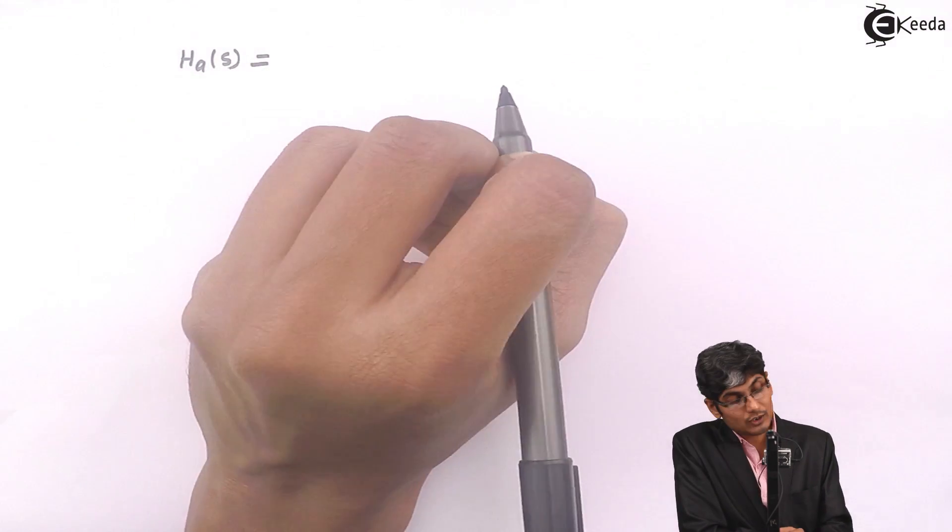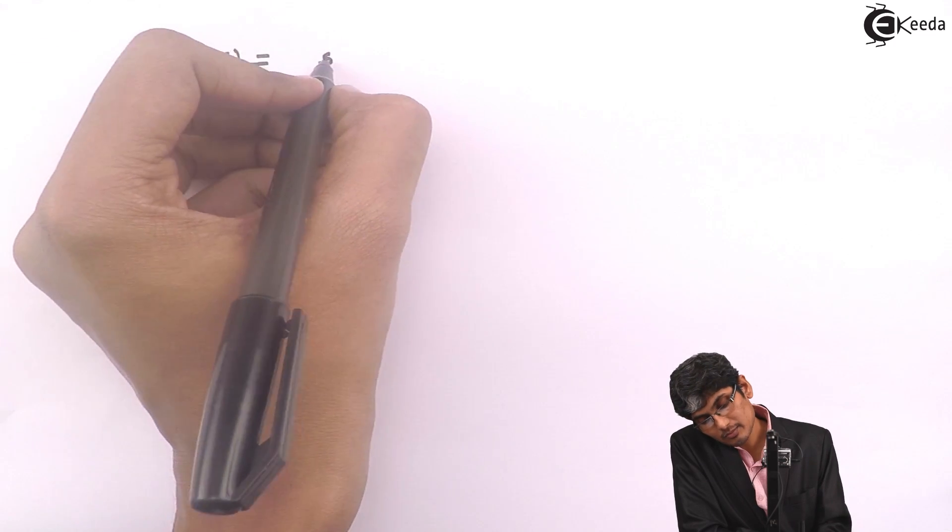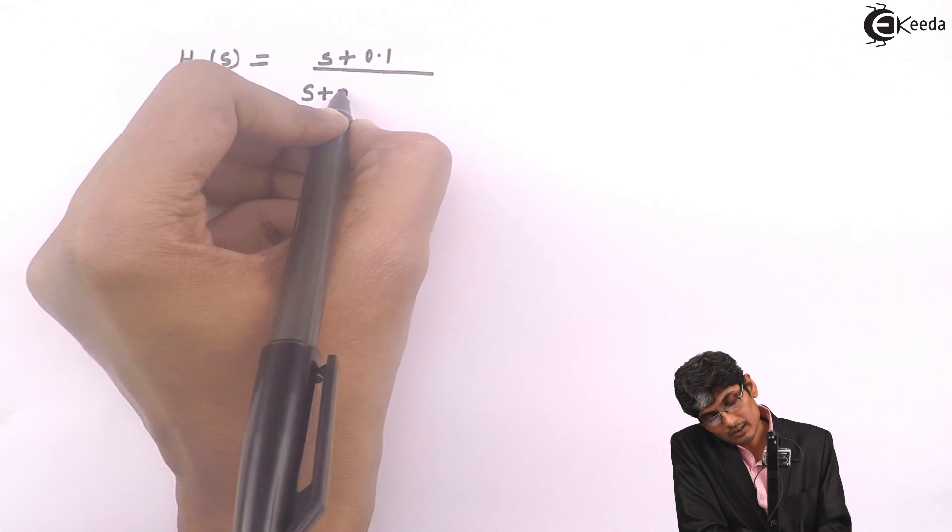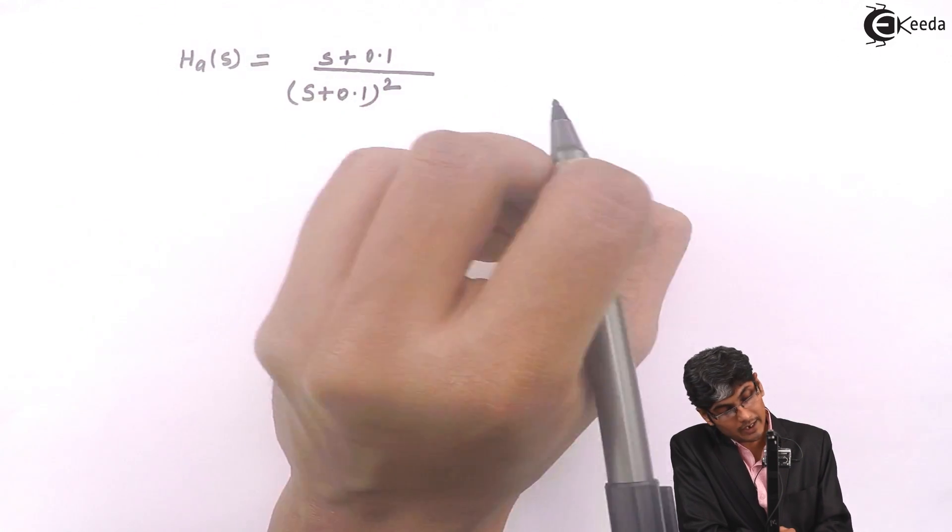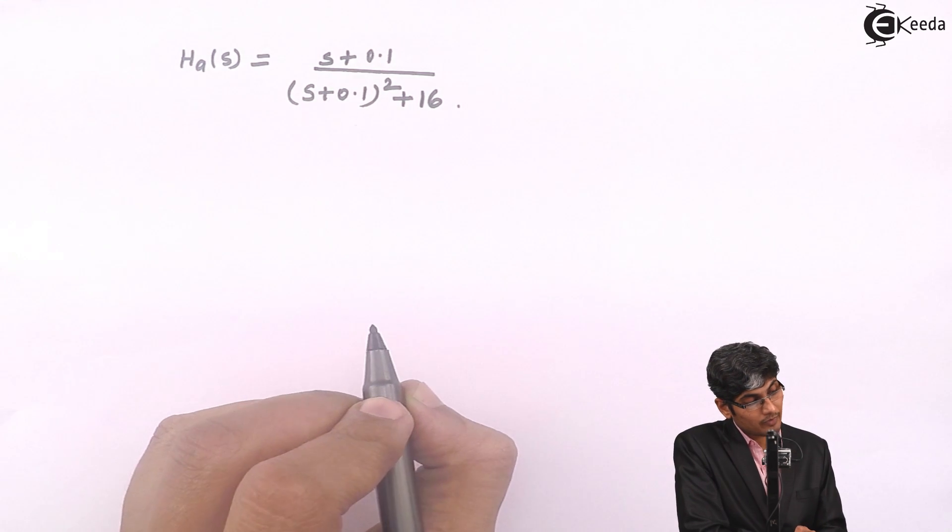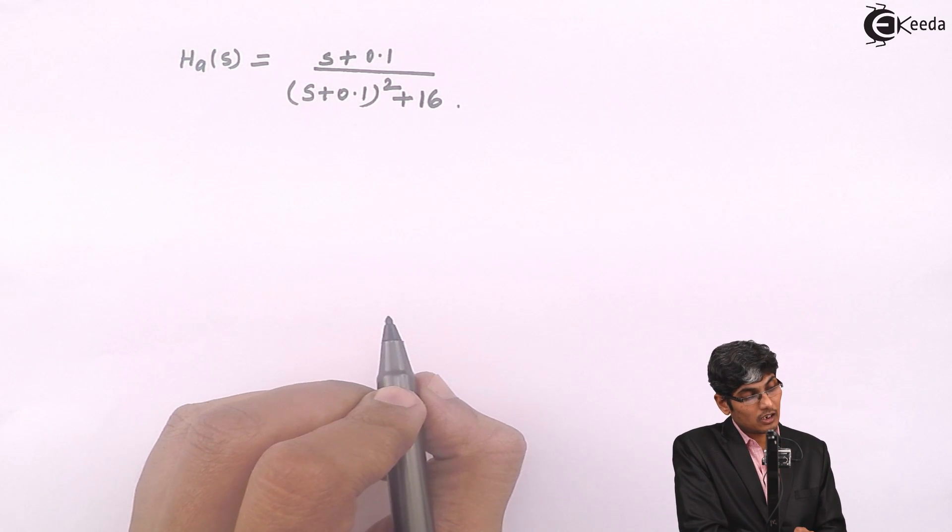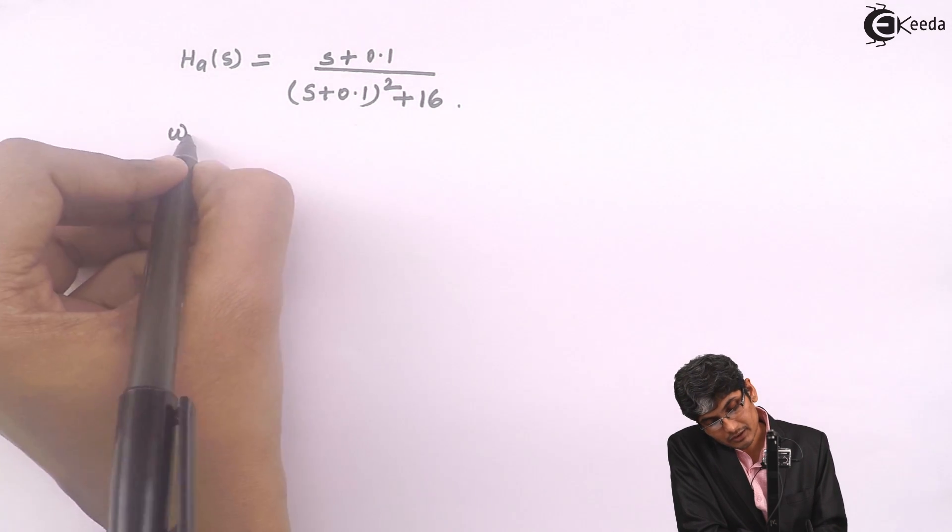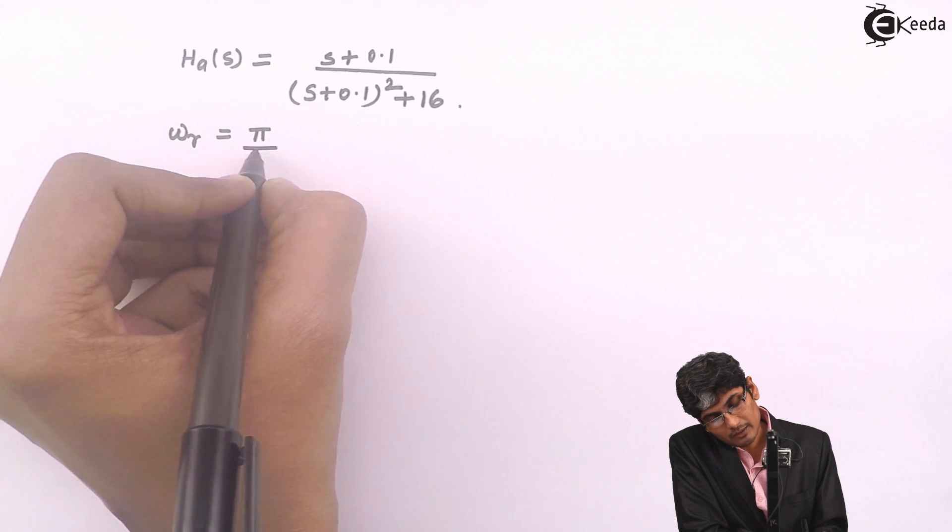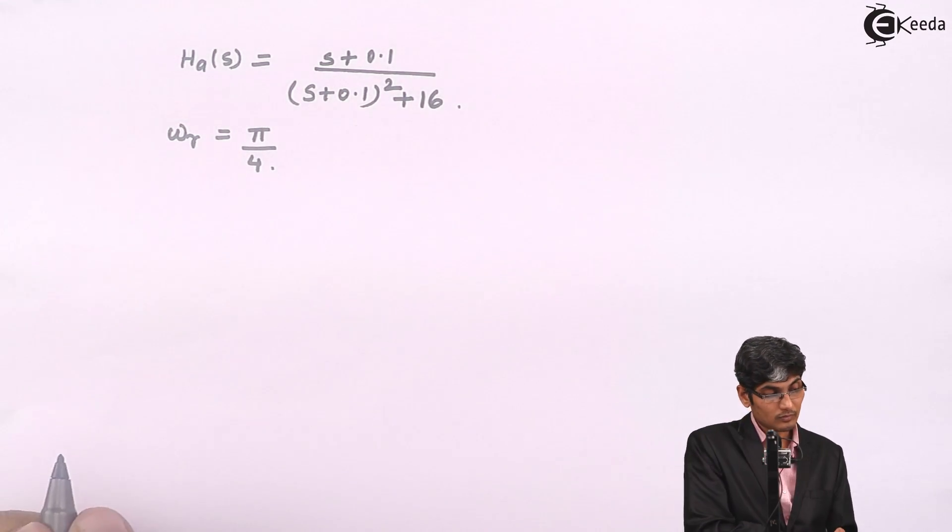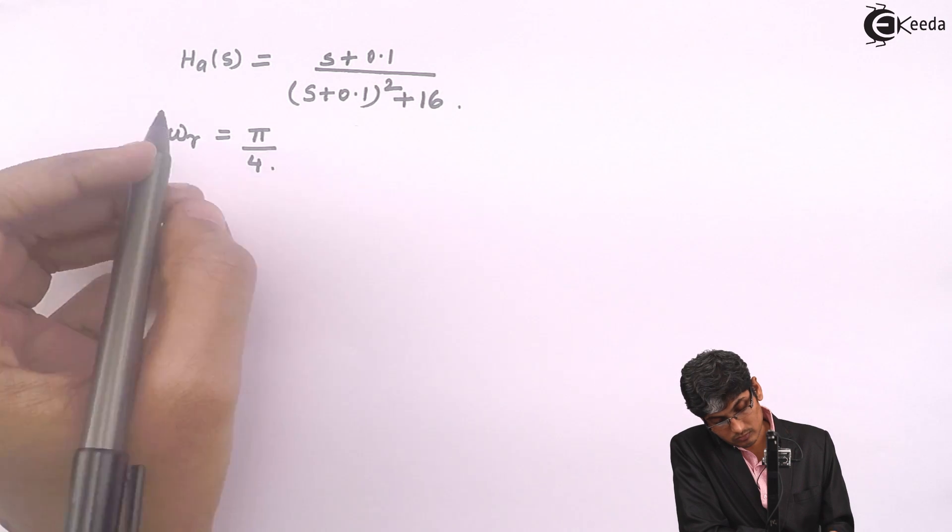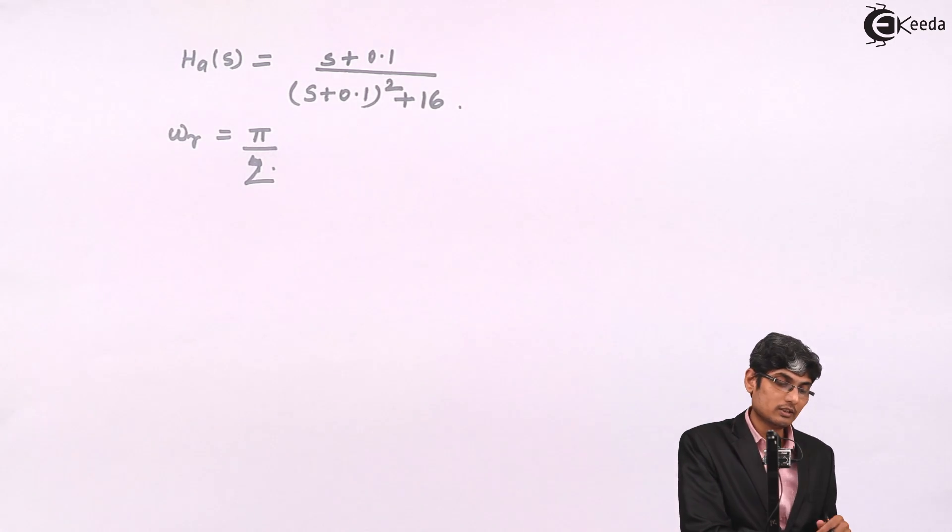Given is Ha of S as S plus 0.1 divided by S plus 0.1 the whole square plus 16. And they have said that the resonant frequency requirement omega r of the digital filter is pi by 4, pi by 2. So let us change it to pi by 2 rather than pi by 4.